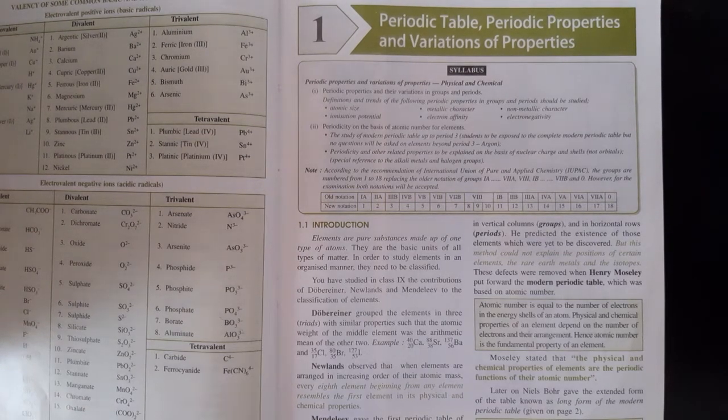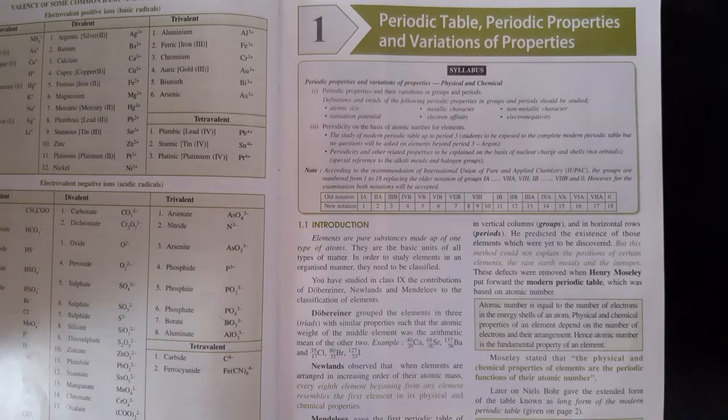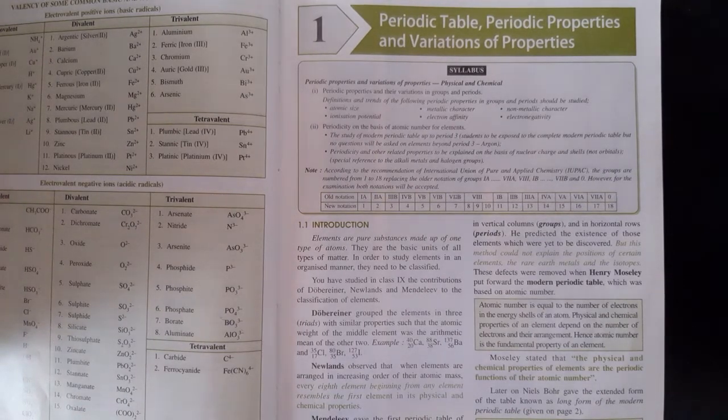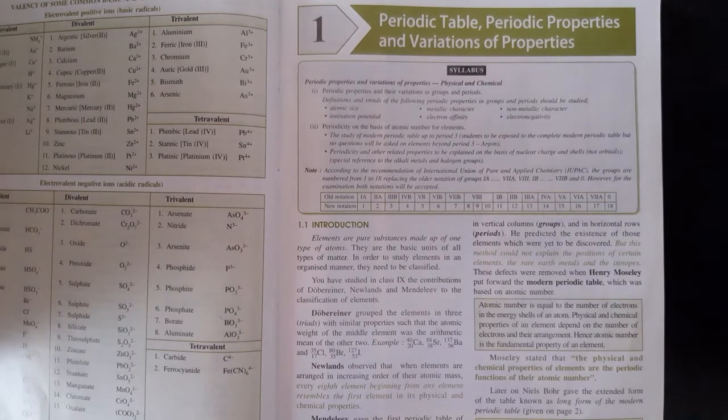Good morning students of class 10, this is your chemistry class. In this class we read the first chapter of your chemistry. The name of the chapter is Periodic Table, its Properties and Variation of Properties. But in the 9th standard we already learned the elements of the periodic table.